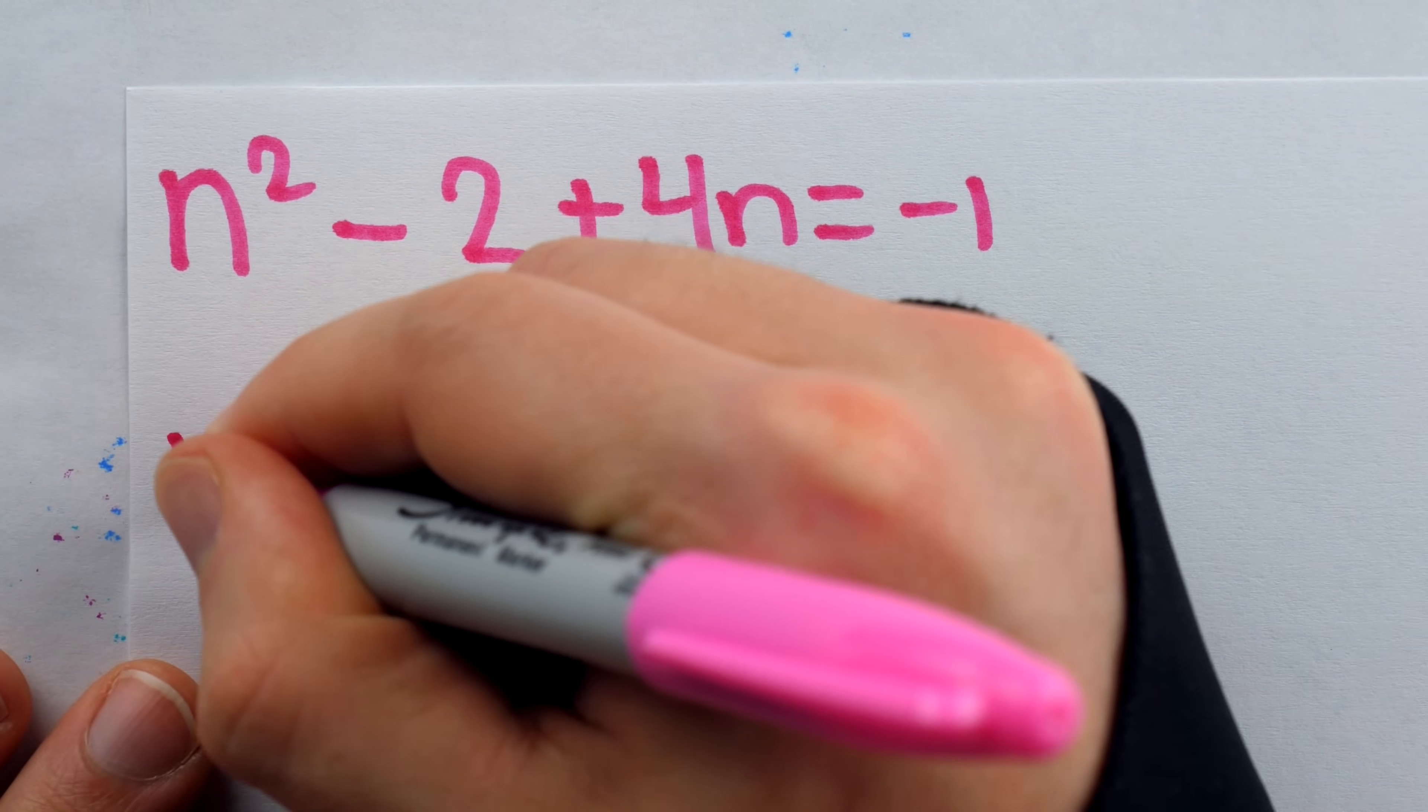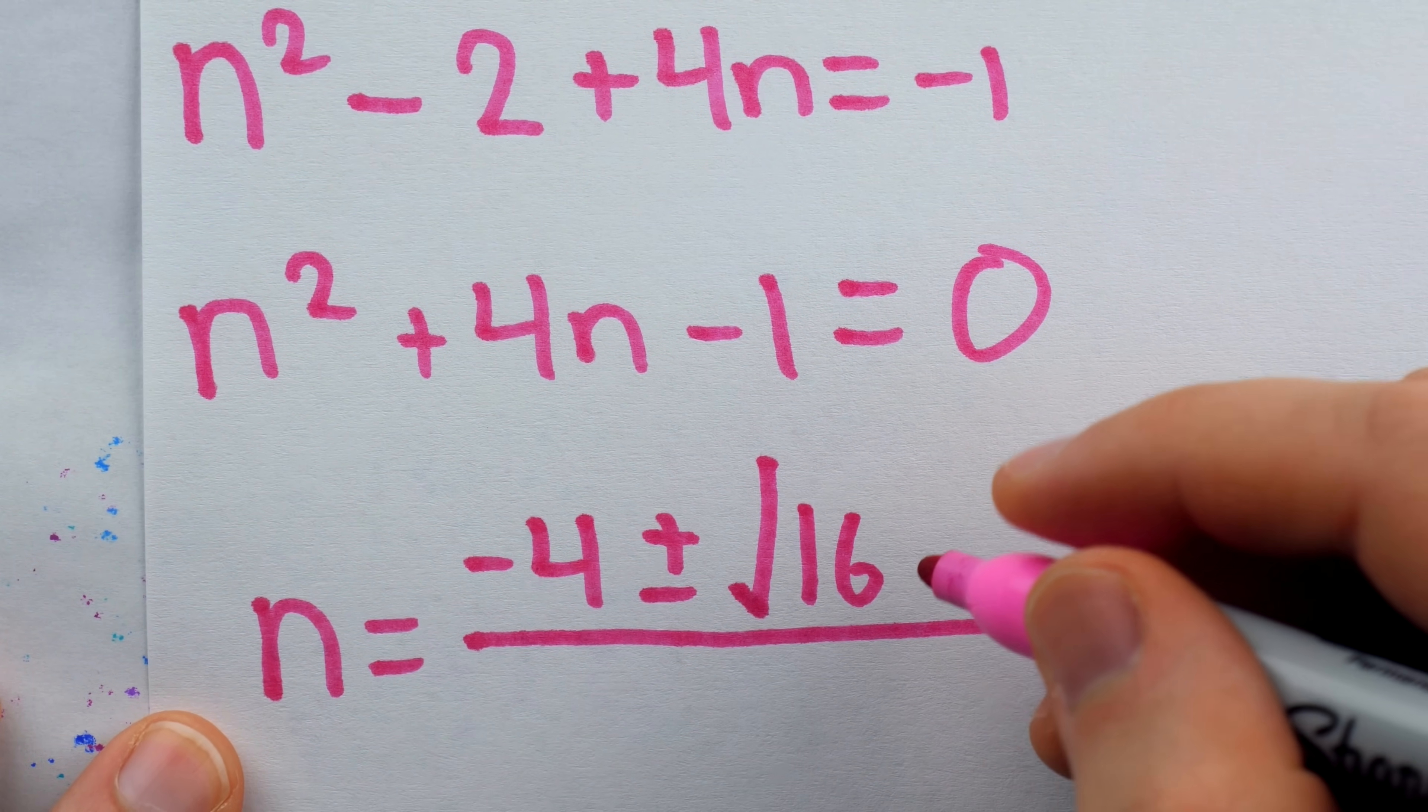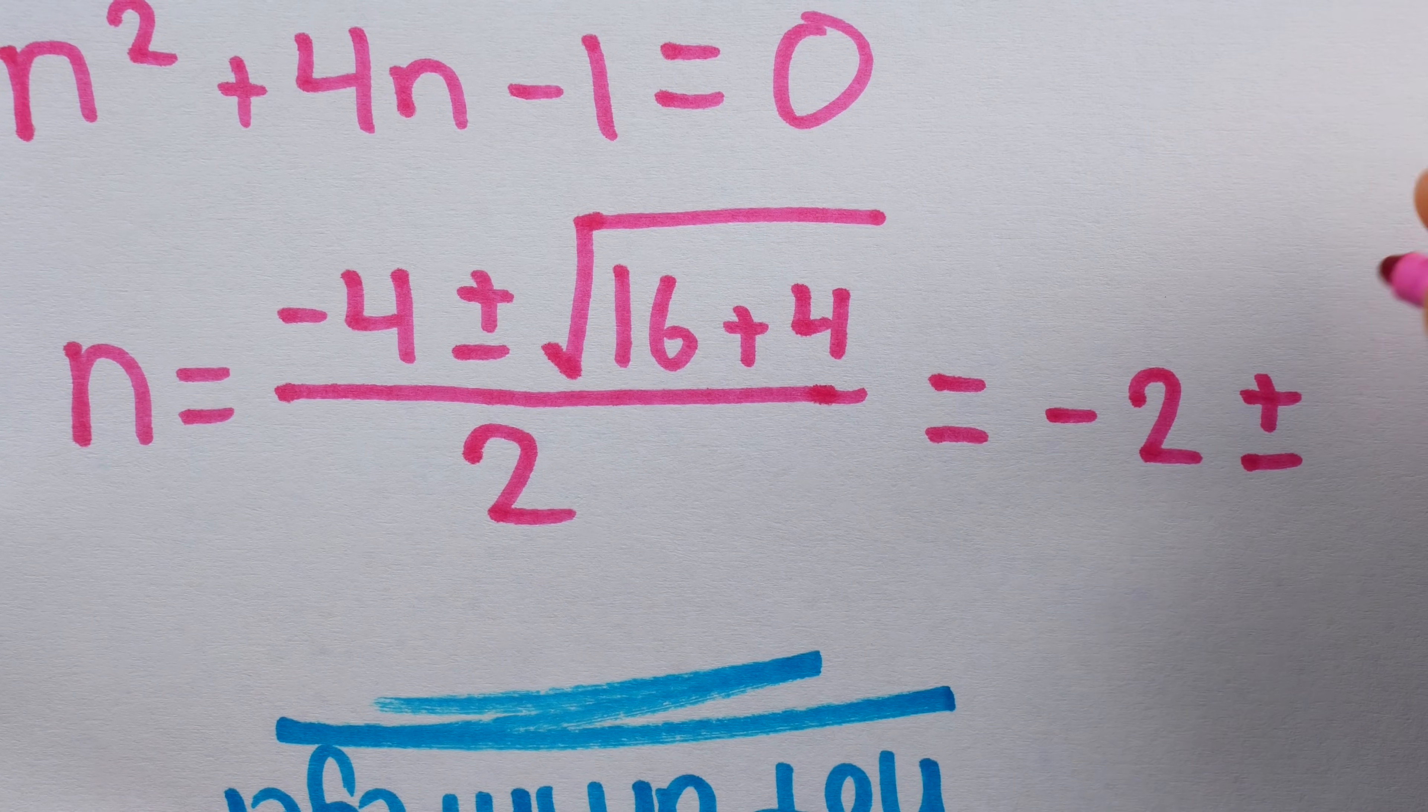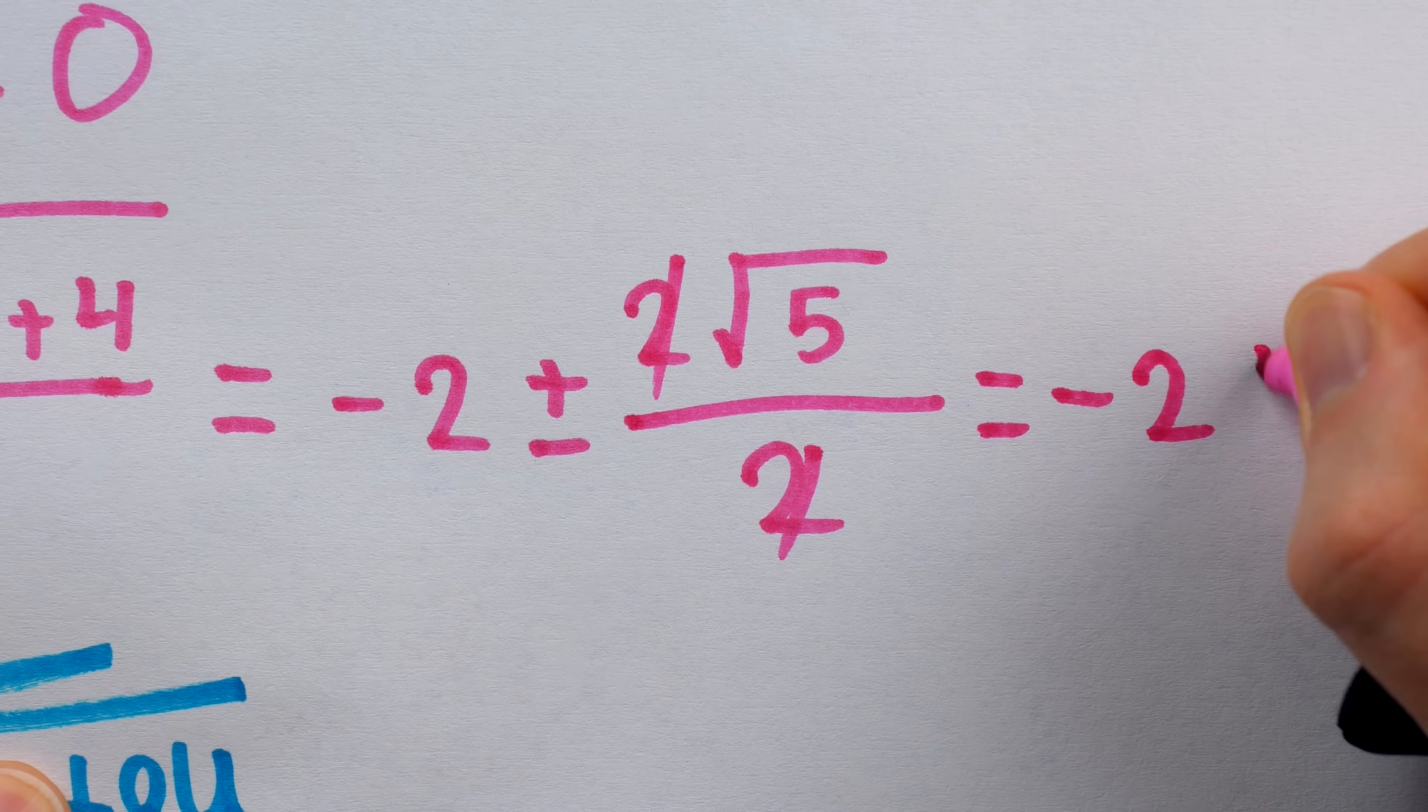If this does equal negative 1, well, we could rewrite this as n squared plus 4n minus 1 is equal to 0, and then apply the quadratic formula. So we'd have that n is equal to negative b, so negative 4, plus or minus the square root of b squared, which is 16, minus 4ac. So that's going to be plus 4, all over 2a, which is 2. Negative 4 over 2 is negative 2. So this is negative 2 plus or minus the square root of 20, but we can take 4 out of that. The square root of 4 is 2. So we would have 2 times the square root of 5, because we did have 20, but we write that as 4 times 5, and take the 4 out of the square root as 2. And in the denominator, we have 2. We see those things cancel out. And what we're left with is that n is equal to negative 2 plus or minus root 5.